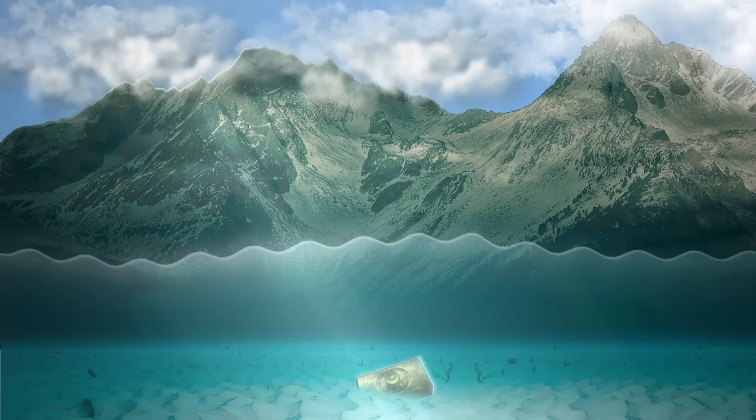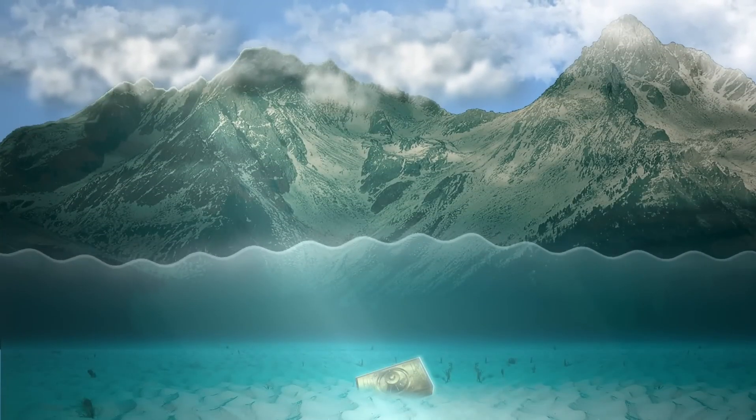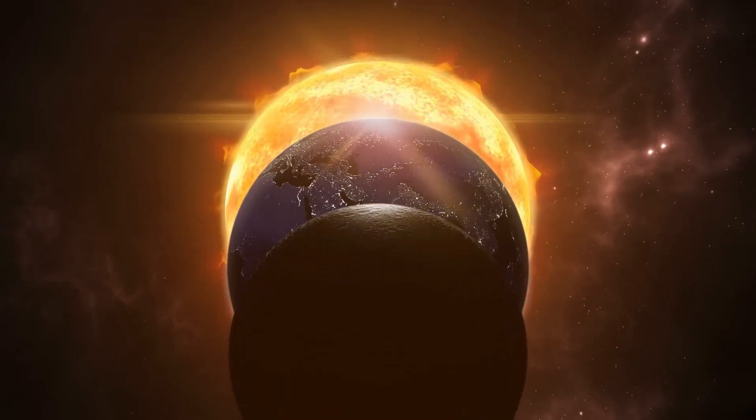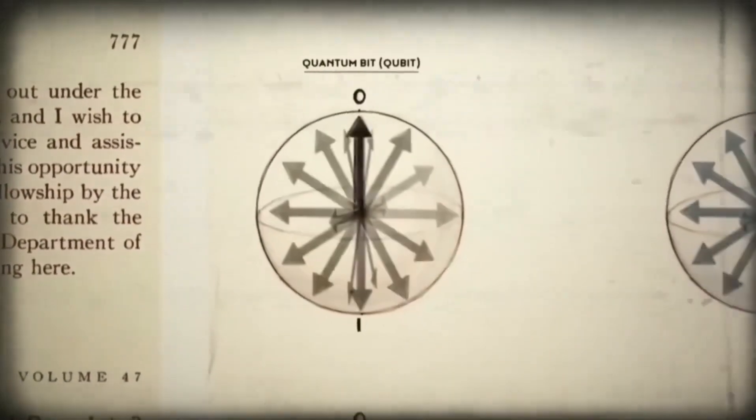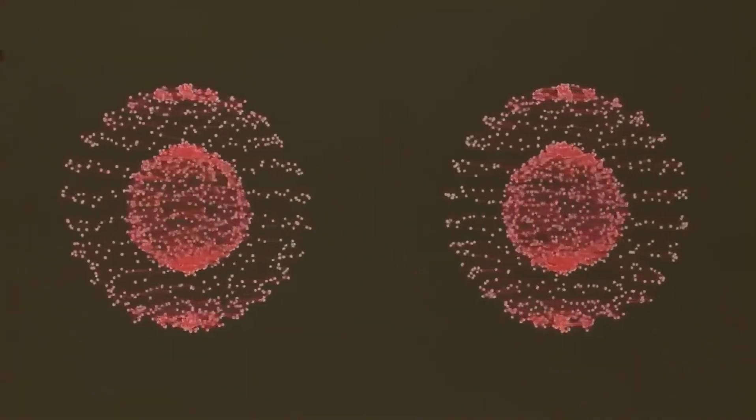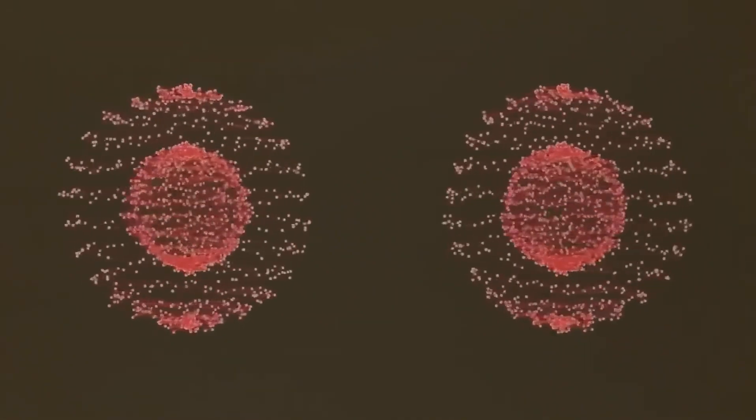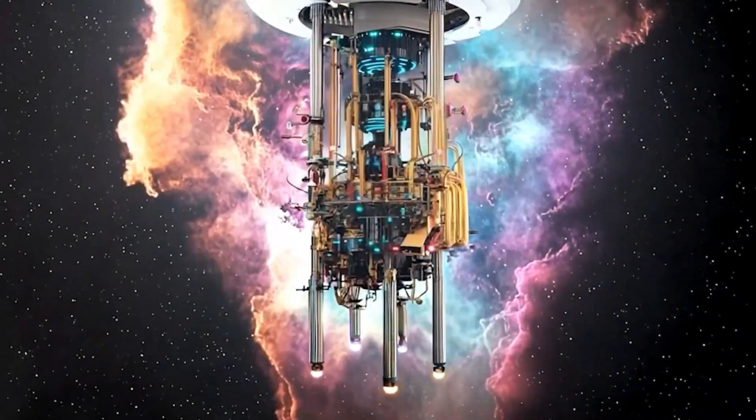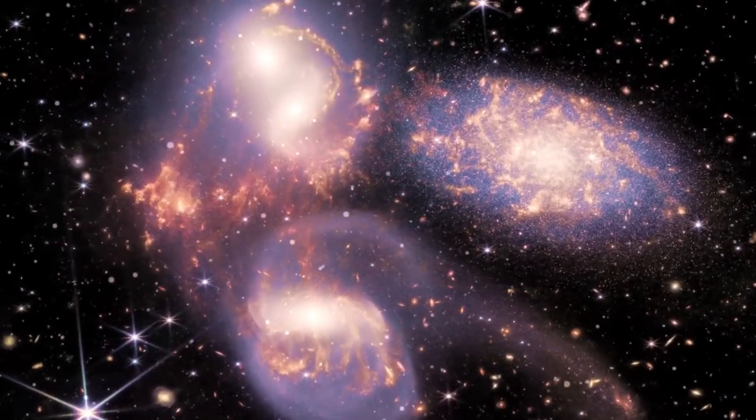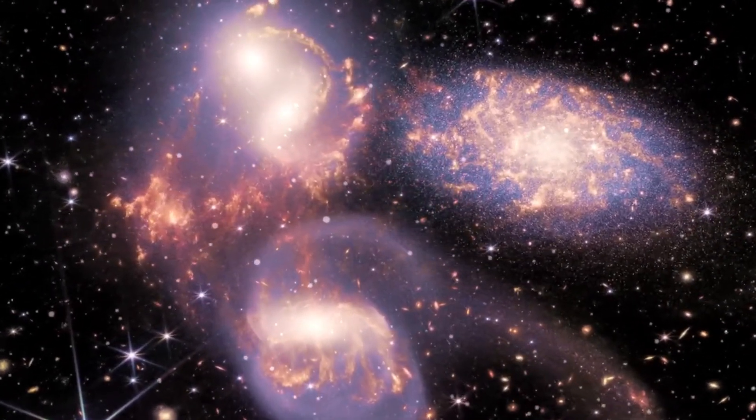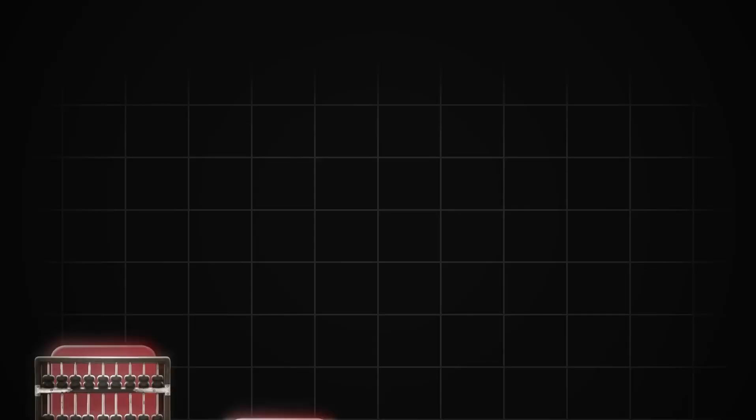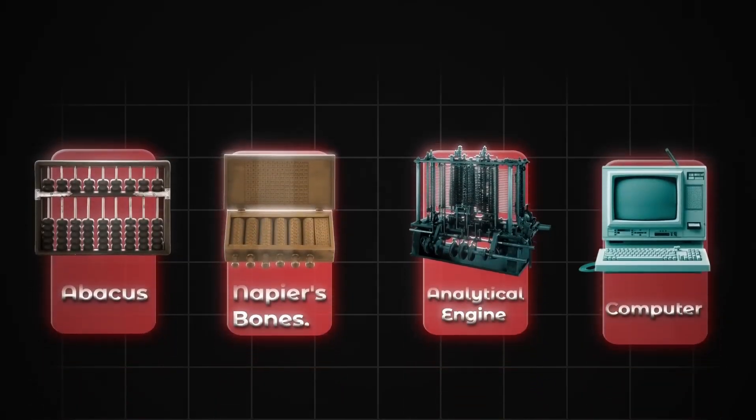Imagine flipping a coin that lands as both heads and tails at the same time. This is essentially what a qubit can do. It can represent both one and zero simultaneously, exponentially increasing computational power. This is where things get weird because our everyday world operates under classical physics, where objects can only exist in one state at a time. Superposition allows quantum computers to perform calculations that classical computers could never achieve.